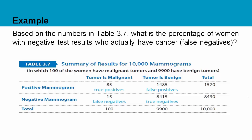If we look at the numbers — the first column, the tumor is malignant, meaning the person has cancer. The second column, the tumor is benign, meaning the person had a tumor but it wasn't cancerous. The first row are all the people who had a positive mammogram, meaning the mammogram said they have cancer. The second row, the negative, came back and said they do not have cancer. These 85 people who had a cancerous tumor — the test was right, it was a true positive. These 1,485 people who had a benign tumor — the test said they had cancer, so those were wrong. These people had cancer but the test said they didn't, which is bad. Then these people didn't have cancer and the test said they didn't, which is good. These two corners the test did what it was supposed to do, and these two is where the test made a mistake.